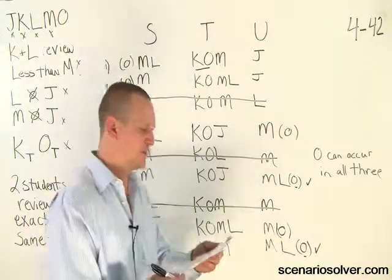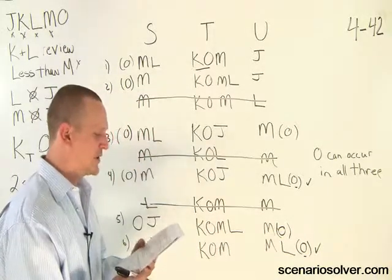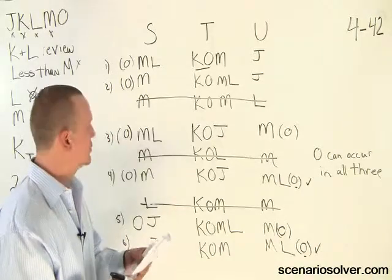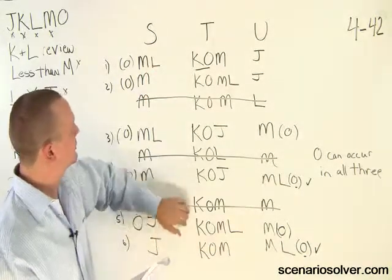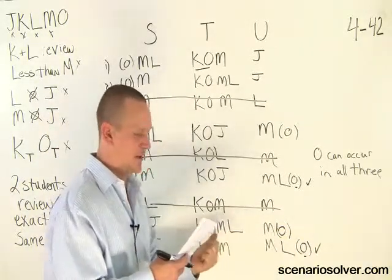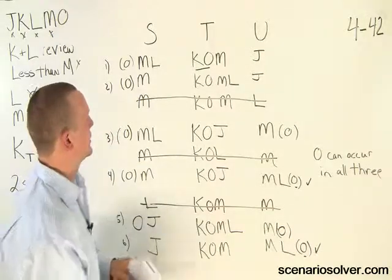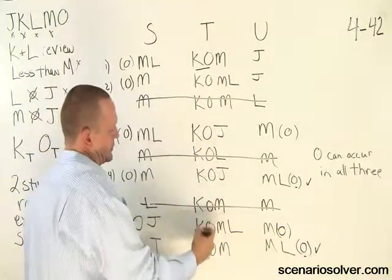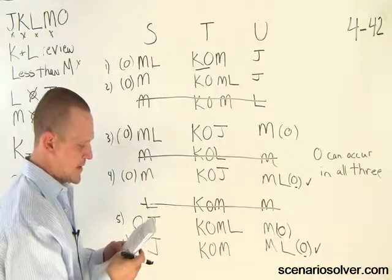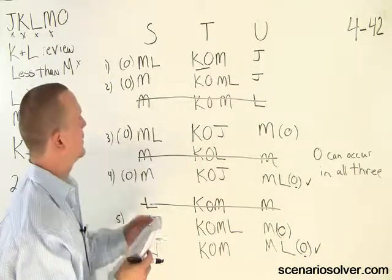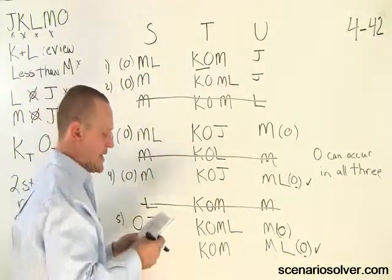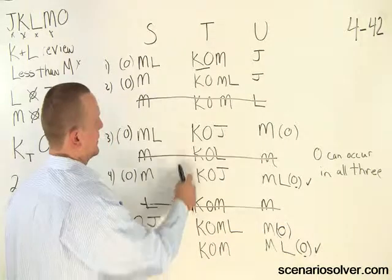Question 22: which one of the following could be an accurate and complete list of the students who review T? Could J and K do it? Well, the minimum we have is three, so J and K are out, which means B — K and O — is out as well. C — K, L, and O. We never have K, L, and O working like that. D — K, M, and O. Well, that happens right here. That's the answer to the question, which is D. E — L, M, O. We never have L, M, and O doing that.